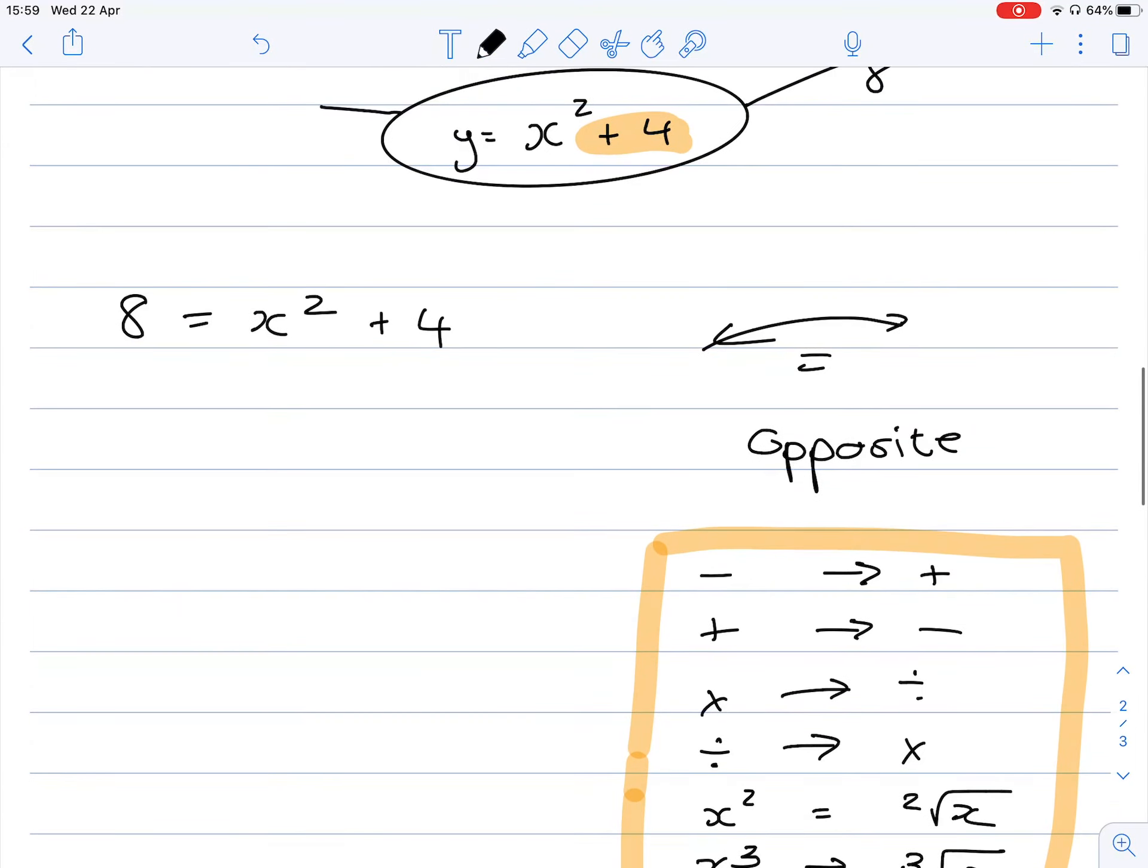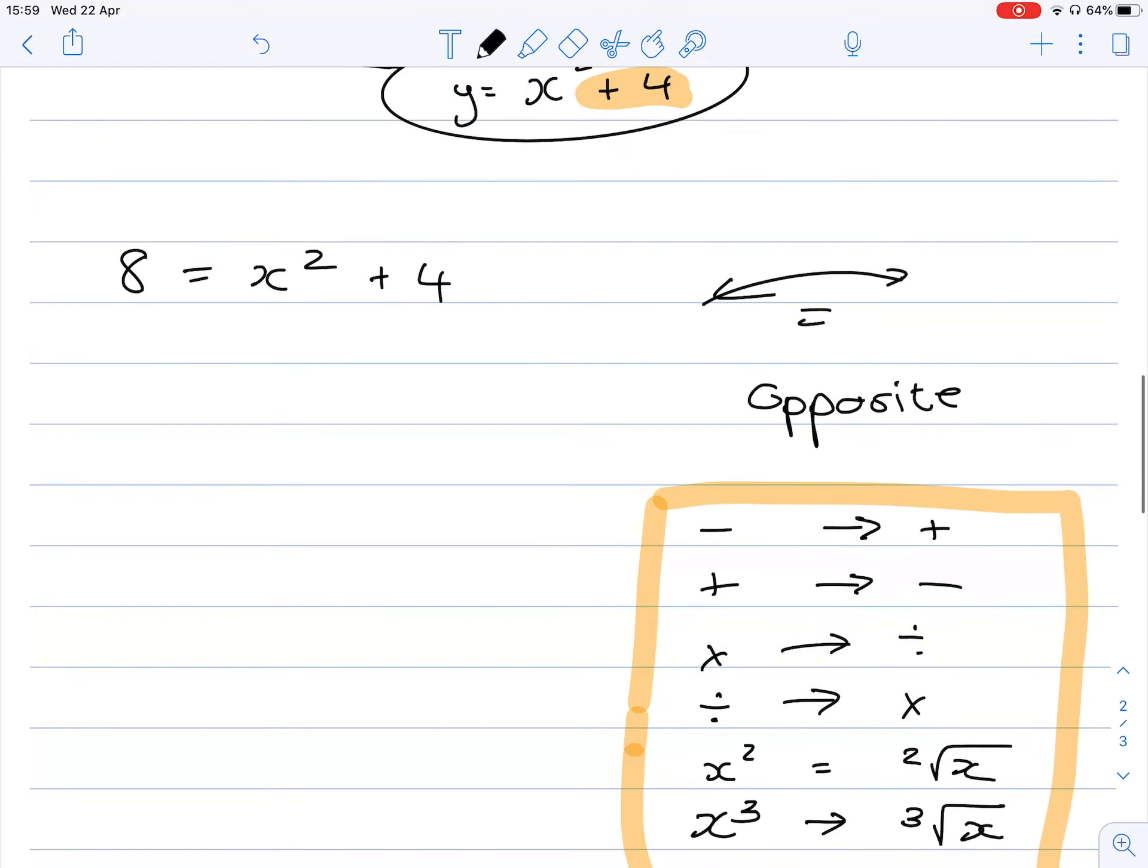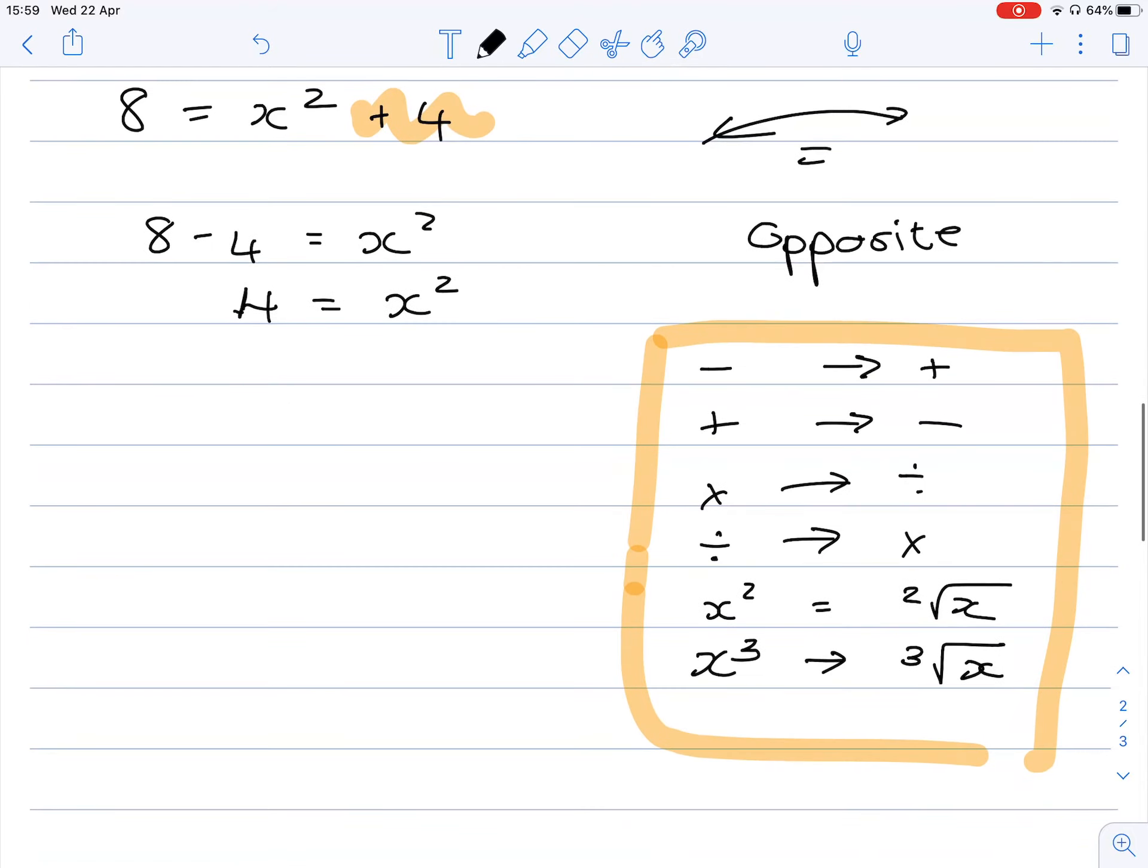And when we do this, according to what I wrote here, we do it in that fashion from top to bottom. So I first take my plus across. So plus changes to minus. So 8 minus 4 is equal to x squared. So 4 would be equal to x squared.